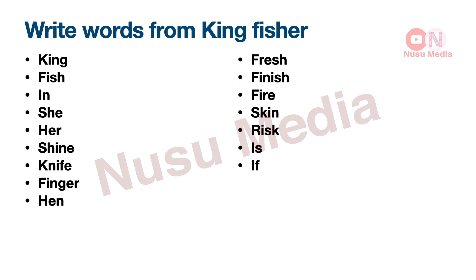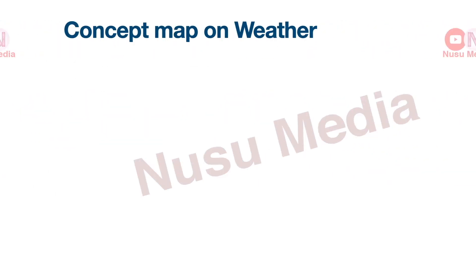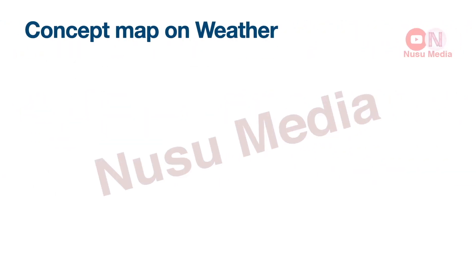The next activity is: Write the Concept Map of Weather. You will write a concept map of weather. We will write 6 types of weather.